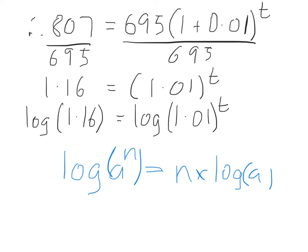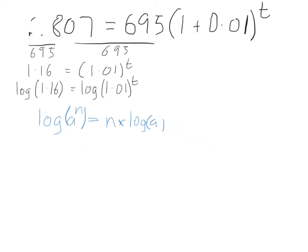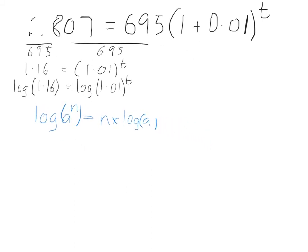Now, the reason why that's handy is because in problems, exponential problems like we've got now, we can basically use that particular rule in order to solve our work here. Because we can basically use the rule to get that t from over here down to here. So, the next line would be log of 1.16. And that's just a function, it's just a number. It's equal to t times the log of 1.01.